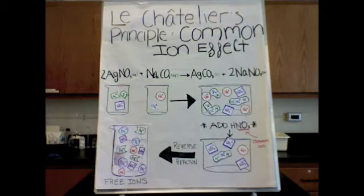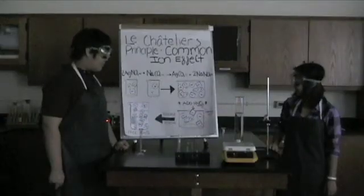Le Chatelier's principle describes what happens here. The nitrate ion, which is a product of the first reaction, is added. This causes the reaction to shift left, speeding up the reverse reaction. As a result, the silver carbonate redissolves. I created more reactants.